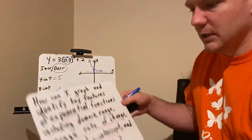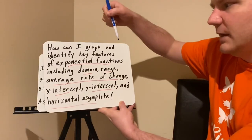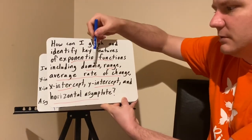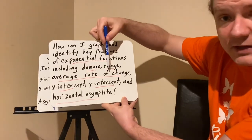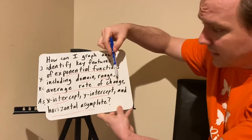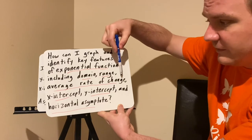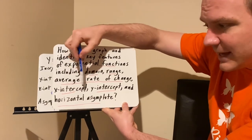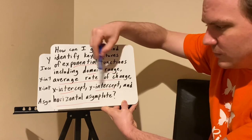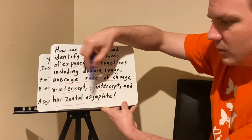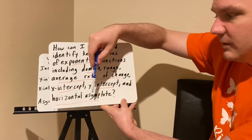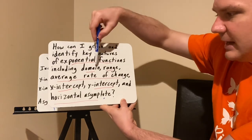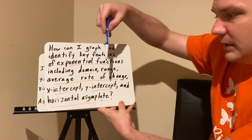So we've covered how to identify and graph key features of exponential functions: domain and range, the average rate of change — basically finding the slope between two points — the x-intercept (which we don't use as often), the y-intercept (the more important value), and the horizontal asymptote. If you know the y-intercept and the asymptote, you can generally sketch the graph and determine the domain and range.